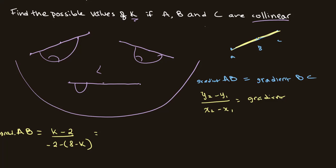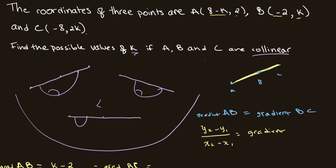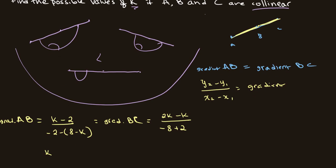And the gradient of BC: y2 minus y1 gives 2k minus k, divided by x2 minus x1 which is minus 8 minus negative 2, so that's minus 8 plus 2. We can write this as (k minus 2) divided by (minus 2 minus 8 plus k), equal to k over negative 6.